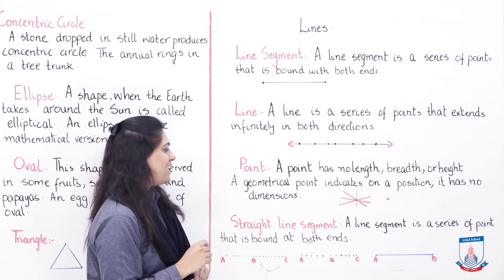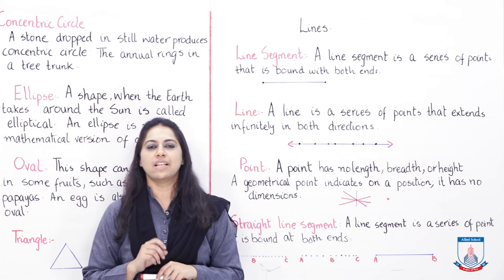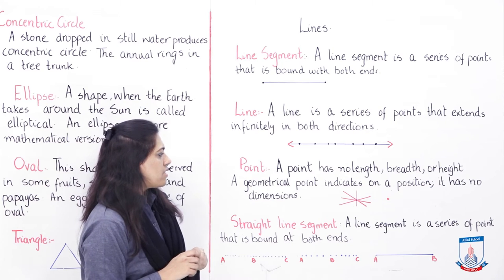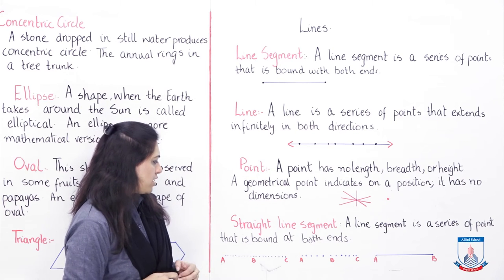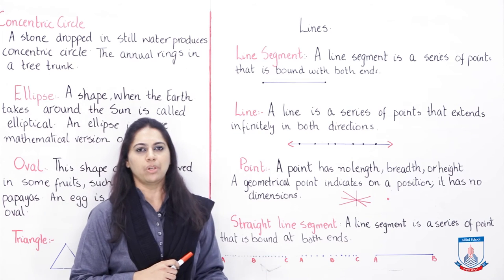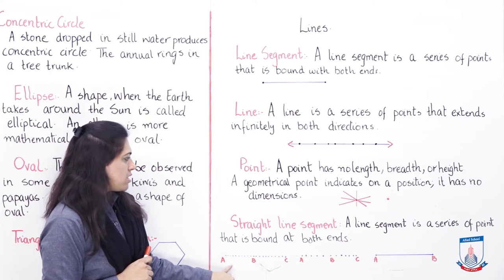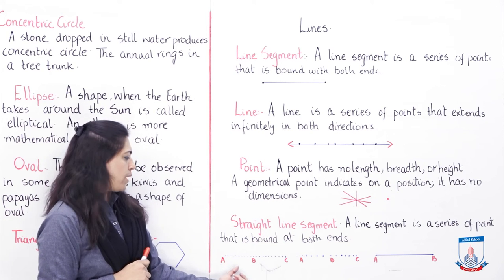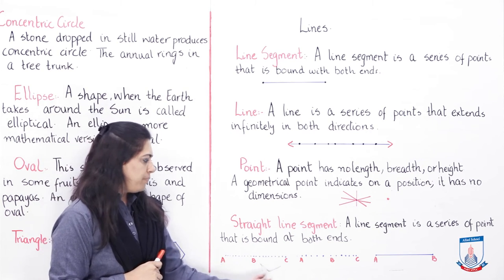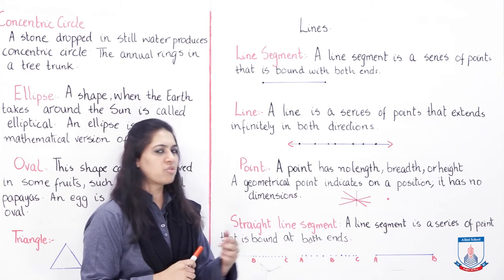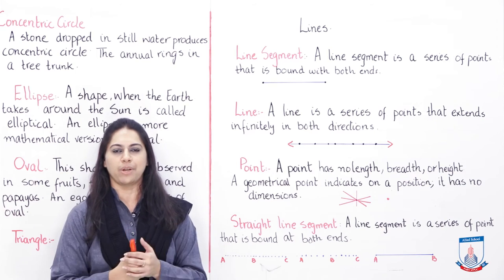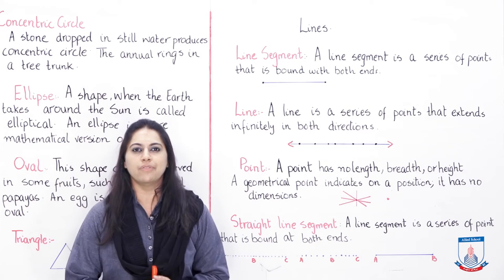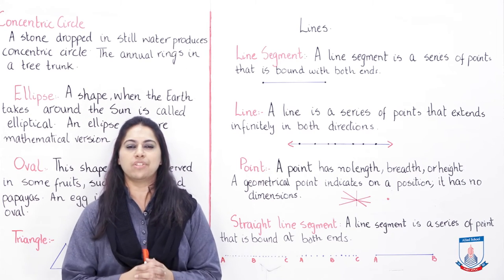Next is straight line segment. A straight line segment is similar to a line segment. A line segment is a series of points that is bound at both ends. As you can see in the diagram, some points are closely packed, some have a little distance between them, and some form a straight line. That means it contains a series of points. So we are done with straight line segment.